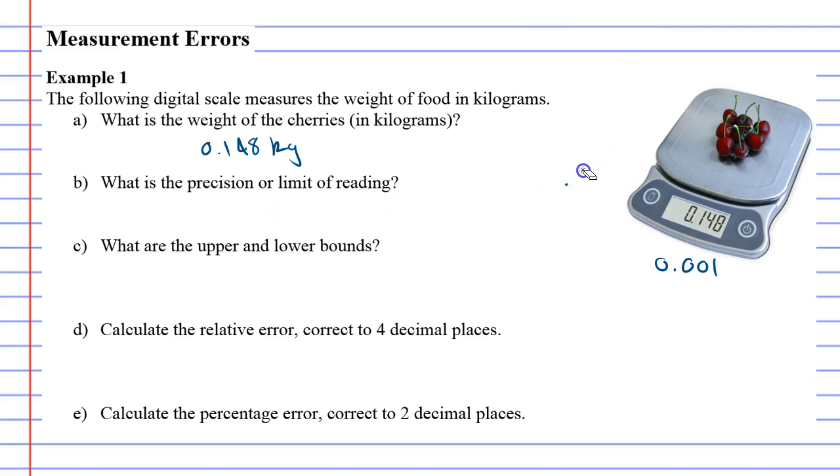So the smallest, the precision or the limit of reading is 0.001 kilograms or we could also say 1 gram since 0.001 kilograms is the same as a gram.